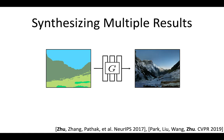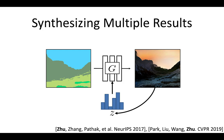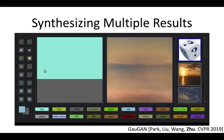One limitation of the above methods is that they only produce one possible output. Often our users want more choices and more creativity. We can make our model stochastic by introducing a latent vector Z to the system. We also ensure we can infer Z from the output image. During test time, we can sample different random vectors and produce different results.